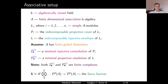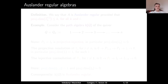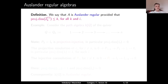Consider also the Serre functor S of the bounded derived category of A-mod, which is given as the left-derived of the tensor product over A with the dual bimodule A-dual. So now we can define Auslander regular algebras. In this definition, we say that A is Auslander regular provided that the projective dimension of the k-th homological component of I^i is at most k, for all k and for all i.